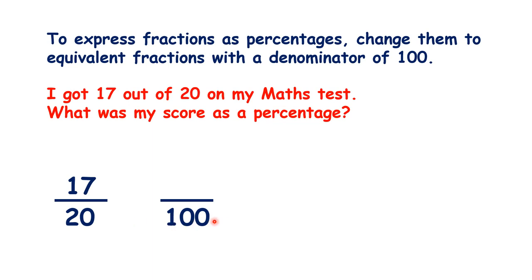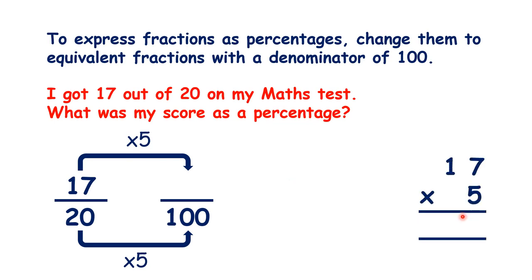To get to 100 from 20, we multiply by 5. So we need to work out 17 times 5. That's 85. So now that we've found our equivalent fraction with a denominator of 100, we know our percentage, 85%.